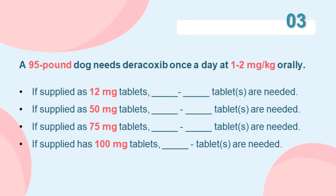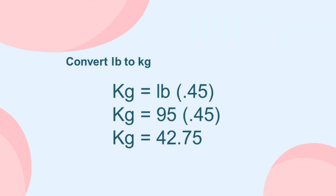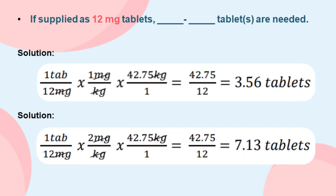A 95-pound dog needs tracleer once a day at 1 to 2 milligrams per kilogram orally. If supplied as 12-milligram tablets, how many tablets are needed? In this problem, the given weight is in pounds, so we have to convert it first into kilograms. Also, we have two given doses, so we will answer each separately.